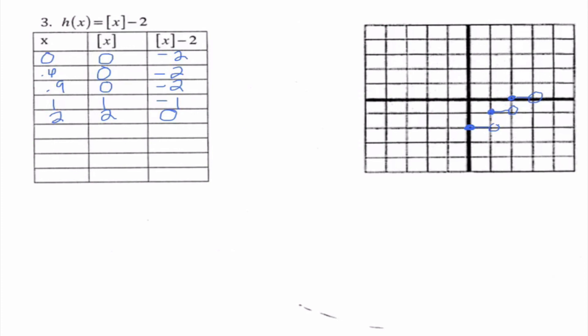This is the greatest integer function. Whenever we see this symbol, we know exactly what it is. Key things to stress: first, always round down. Second, try fractions to double-check where the jump occurs. Lastly, notice that in example 3 the graph starts at y = −2 right away instead of y = 0 — that's because of the minus 2, which we call a vertical shift down 2. If it said plus 2, the graph would shift up 2. This value affects where our graph starts vertically.